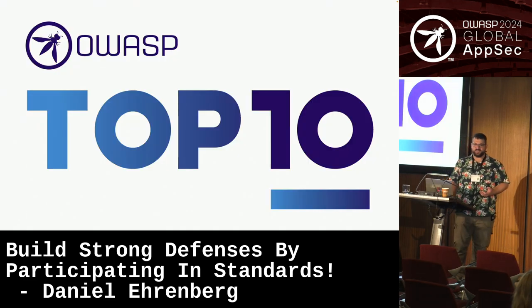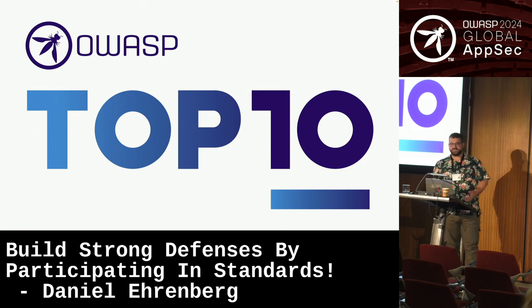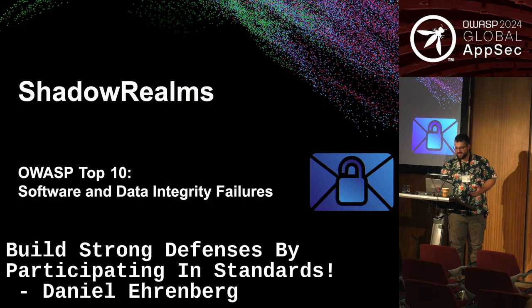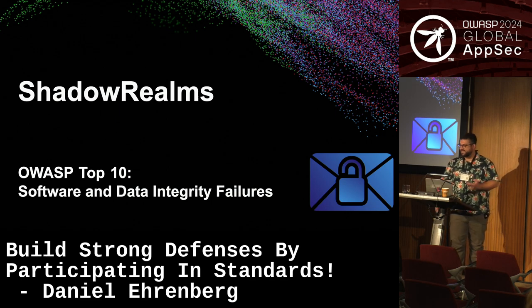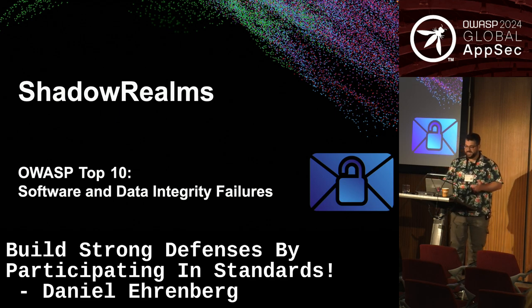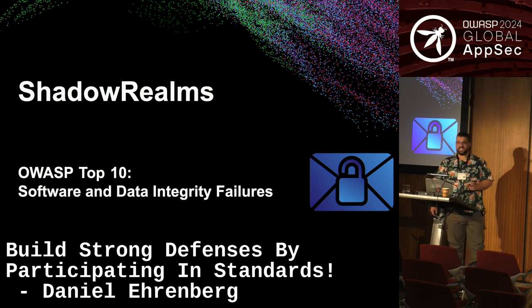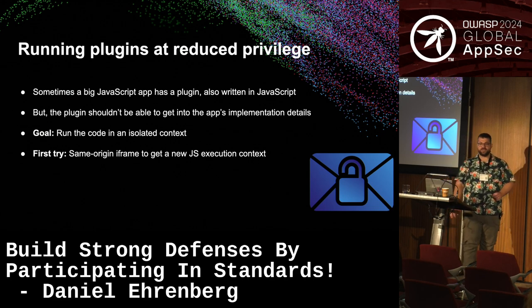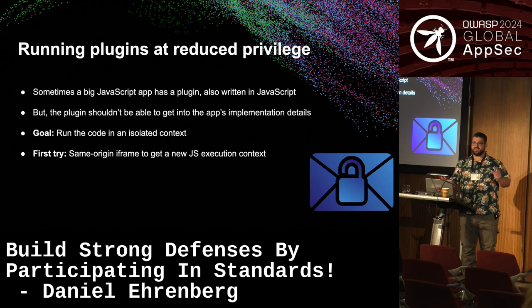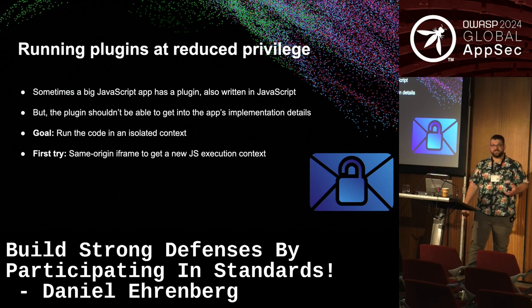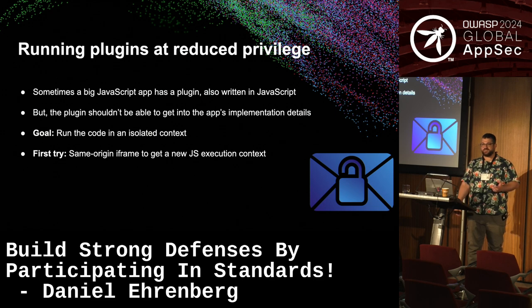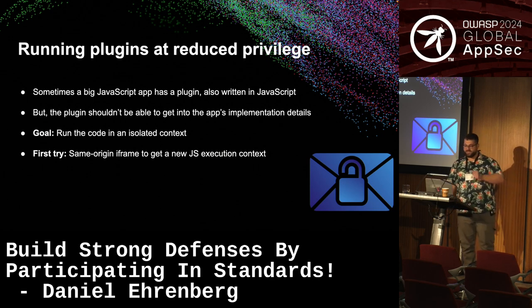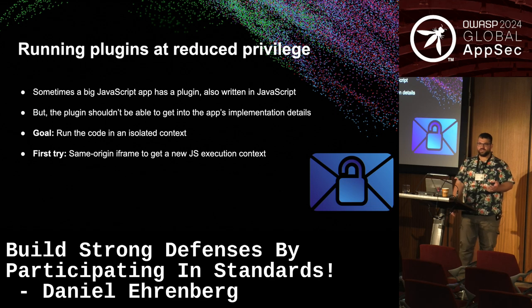This is a security conference. I want to talk about how new features or changes to JavaScript and other standards can help solve or create defenses for the OWASP Top 10. One of these defenses is called Shadow Realms — a feature of JavaScript that intends to provide protection against software and data integrity failures. The goal is to run plugins that reduce privilege.